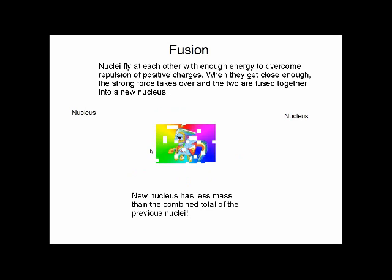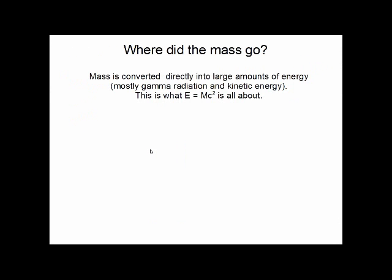The resulting nucleus, though larger than either of the two previous ones, actually has less total mass than the combined total of the two previous nuclei. So what happened to this missing mass? The mass is actually converted directly into large amounts of energy, mostly in the form of gamma radiation and kinetic energy of any parts that may be flying off, or of the nucleus that comes out of it.